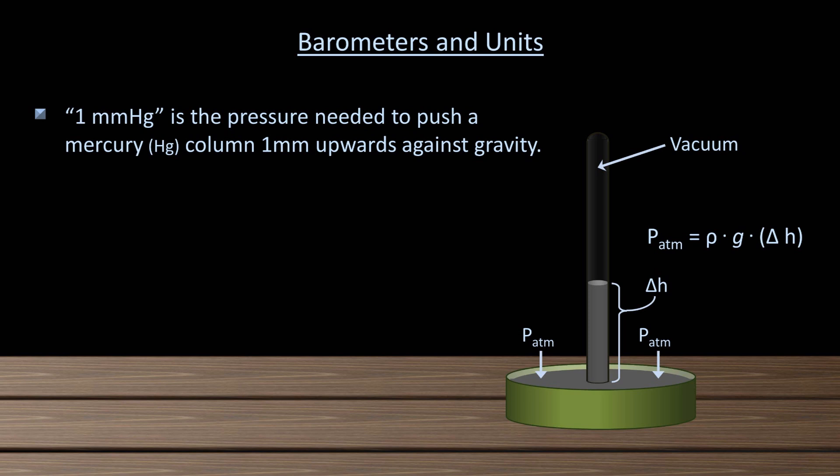Now as any meteorologist knows, atmospheric pressure is not constant. We have low pressure systems that typically bring bad weather, and high pressure systems that typically bring good. However, these changes are relatively small, and for many real-world applications, they can be neglected. Therefore, what is known as standard atmospheric pressure is defined as a constant that is 760 mm of mercury by definition.